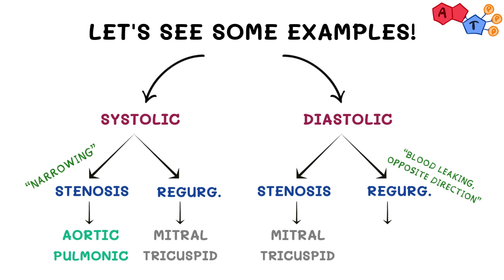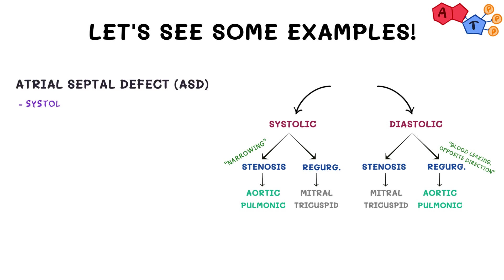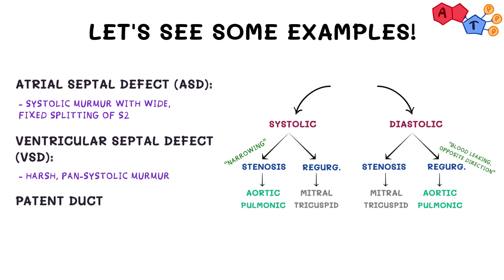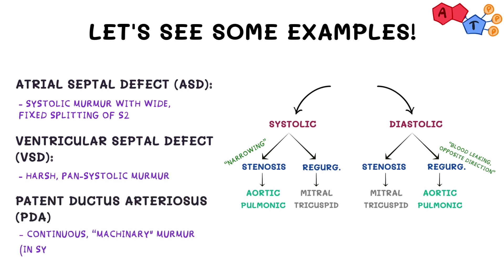Systolic murmurs include aortic and pulmonic stenosis, and mitral and tricuspid regurgitation. Diastolic murmurs include aortic and pulmonic regurgitation, in addition to mitral and tricuspid stenosis. Of course, these are not the only disorders that can result in heart murmurs. You also have other conditions such as atrial septal defect (ASD), ventricular septal defect (VSD), and patent ductus arteriosus (PDA) — all of which can result in heart murmurs.